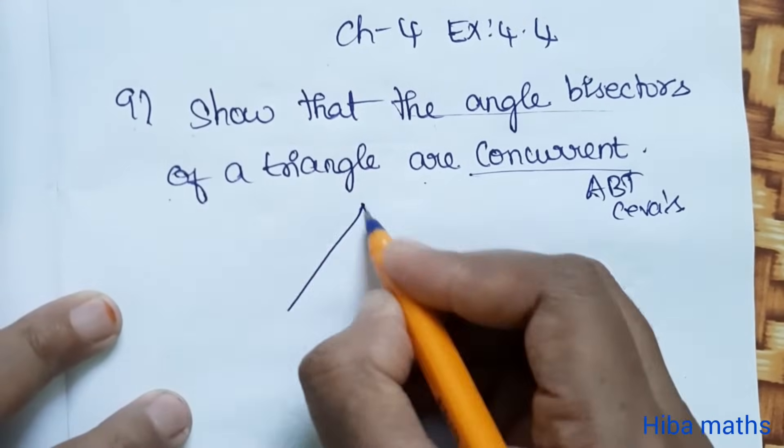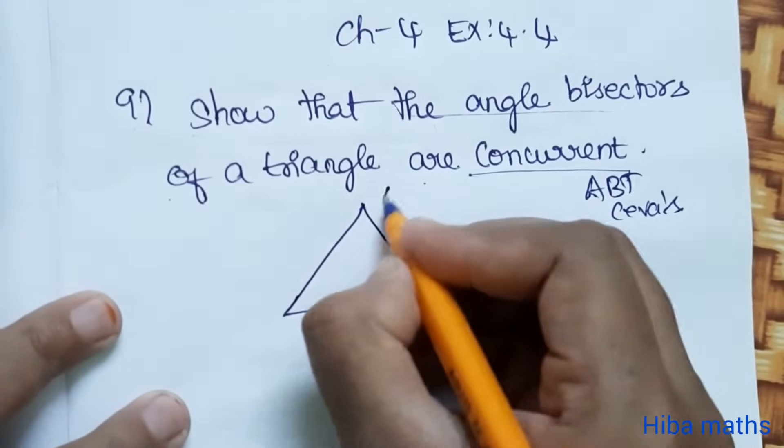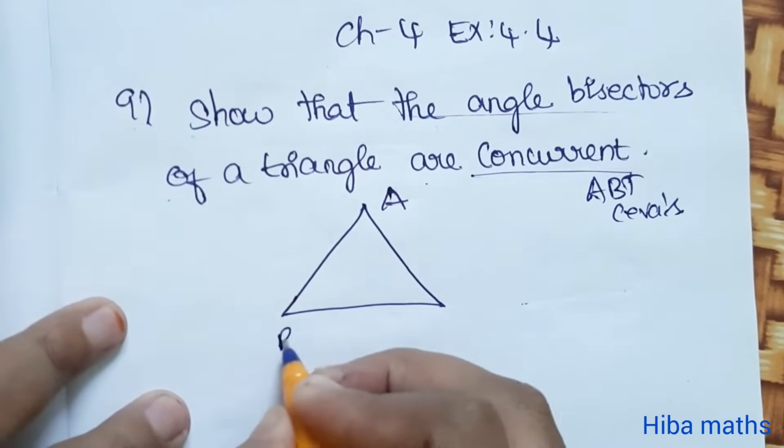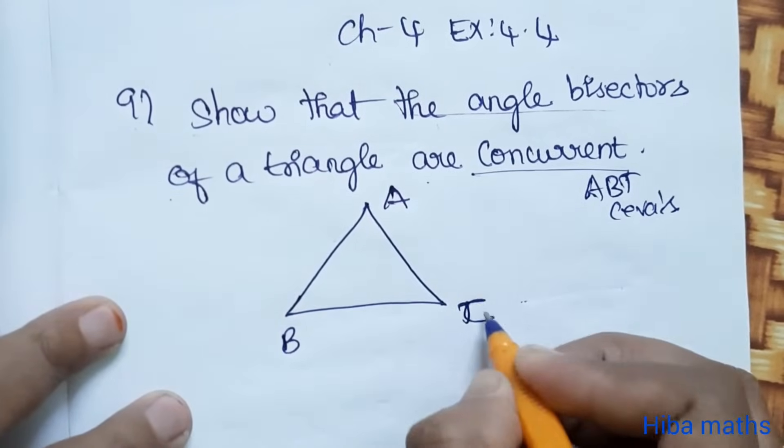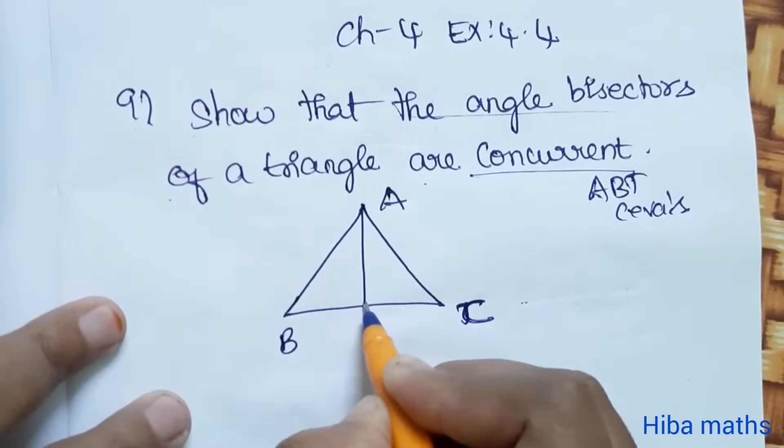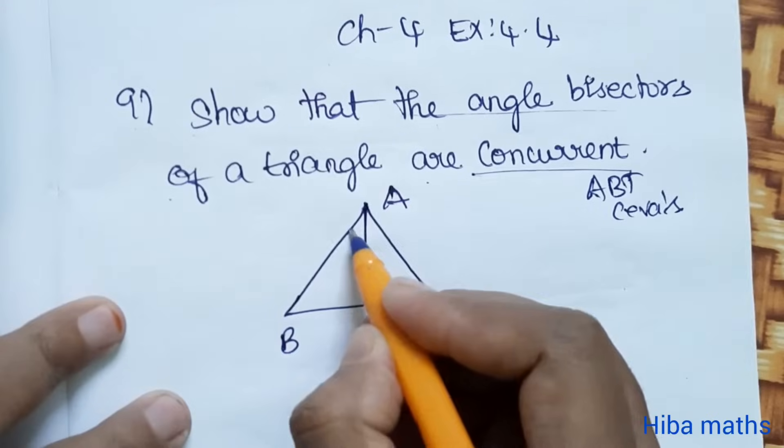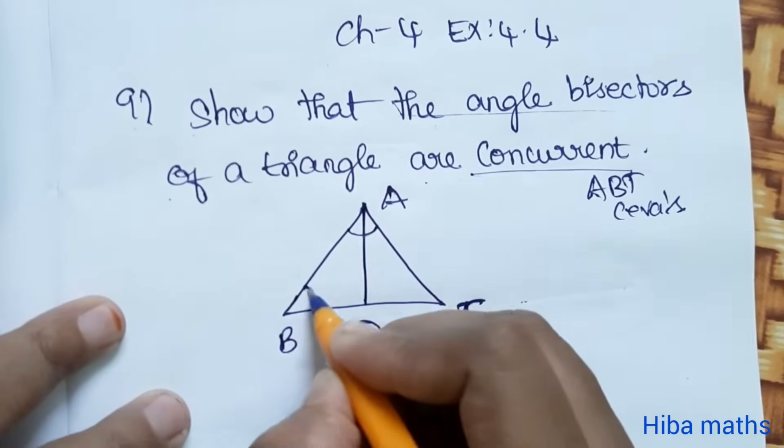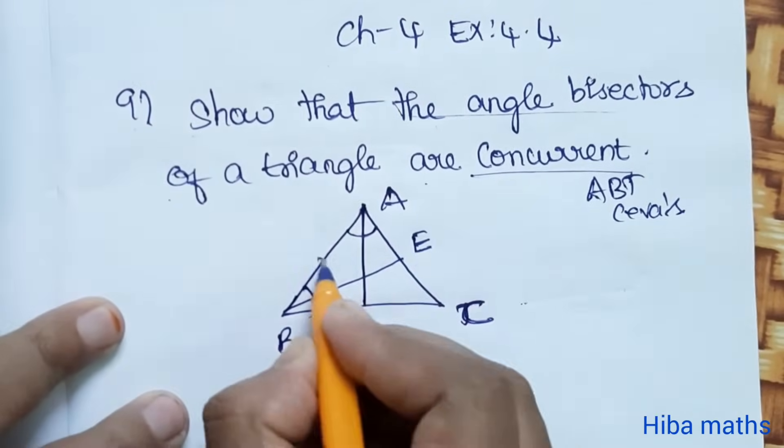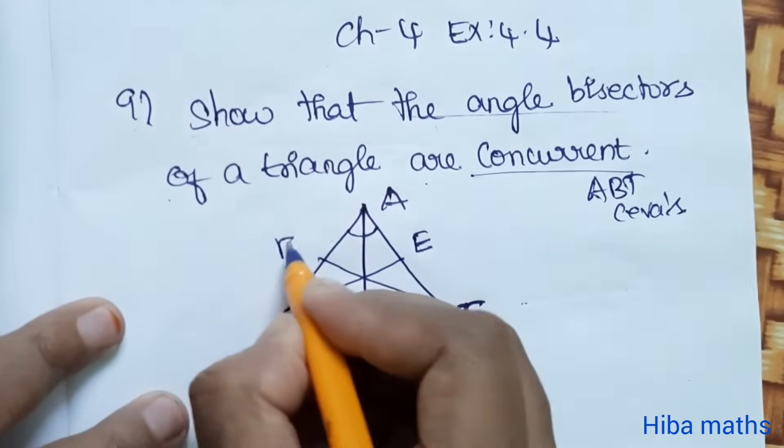So let's take a diagram. ABC is a triangle. A angle bisects at D, B angle bisects at E, C angle bisects at F.